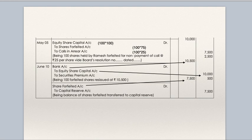Now these 100 shares are forfeited. Equity share capital account debit: 100 shares × Rs. 100 called up = Rs. 10,000. To shares forfeited account: 100 × 75 = Rs. 7,500 (amount received). To calls in arrears: 100 × 25 = Rs. 2,500 (amount not received).